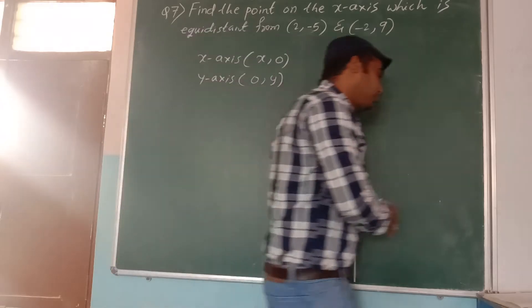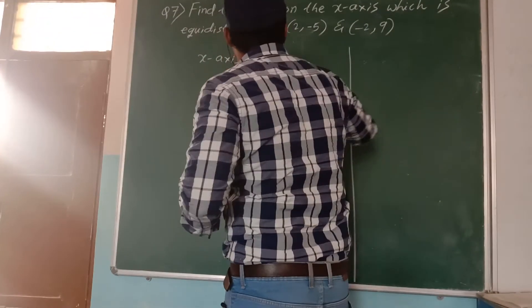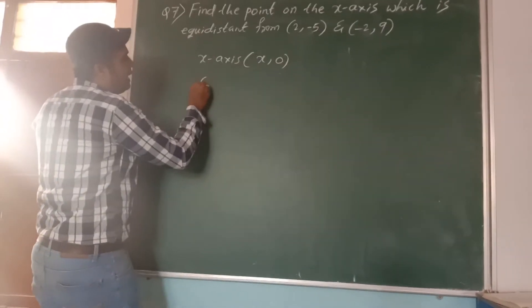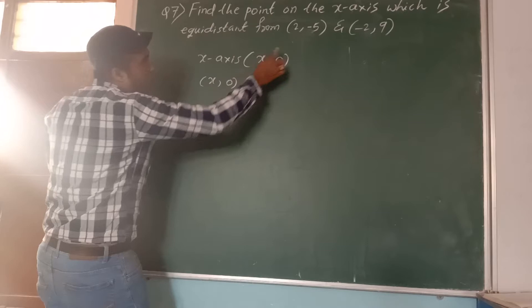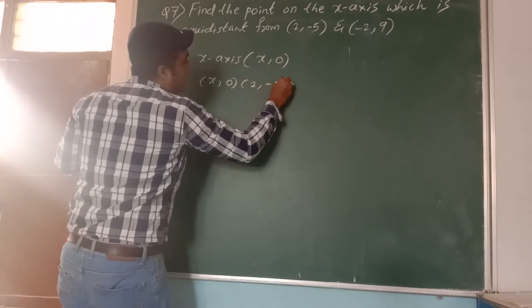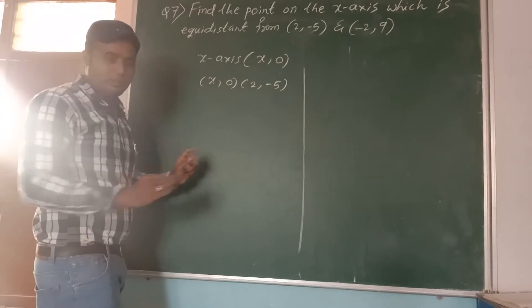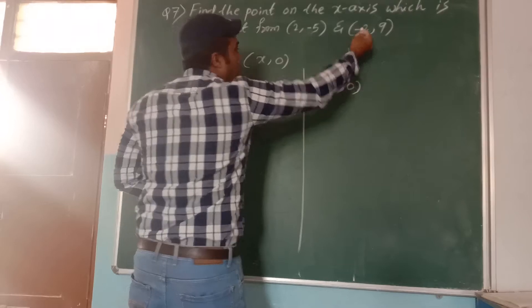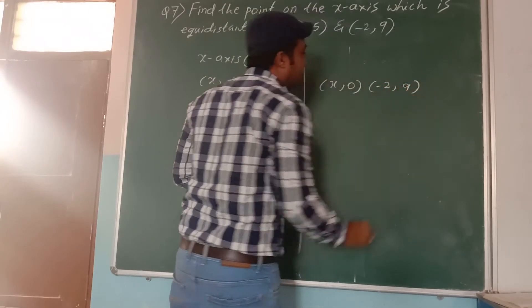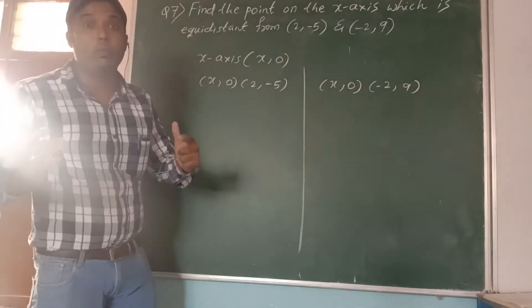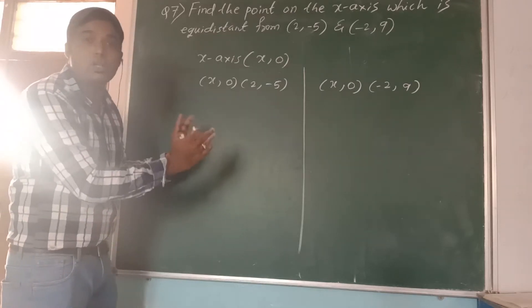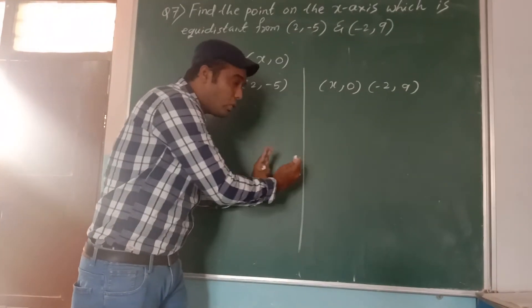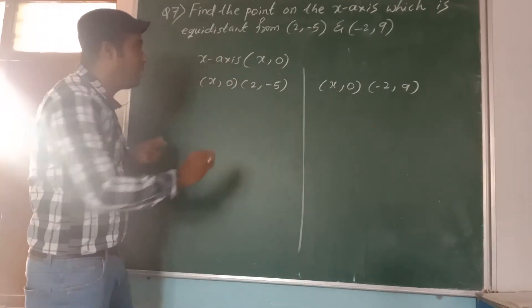Let us solve this. Now, using equidistance, what I am doing: I will take the point (x, 0) first with (2, -5), and make one part. Second side, take (x, 0) with (-2, 9). This exercise is totally based on the distance formula — we apply it to both sides and compare both equations. That's it. We will get one x value.